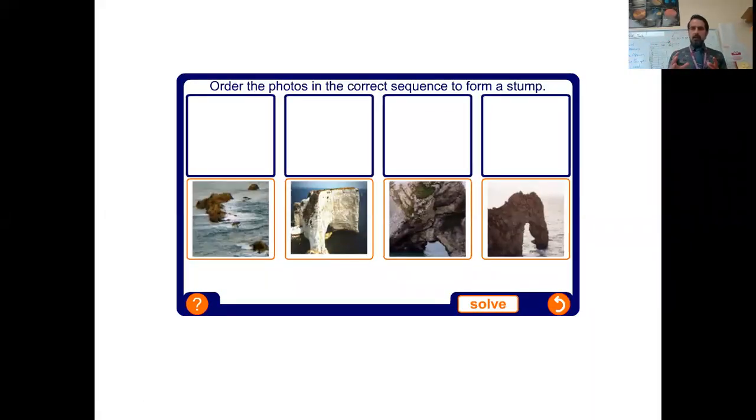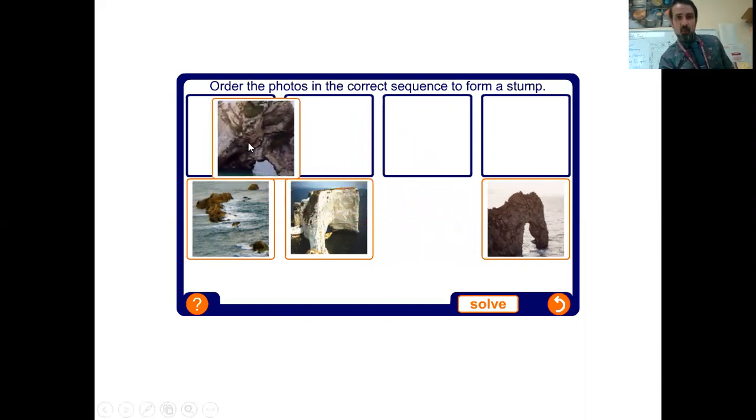Last lesson we looked at coastal features and erosion, including those four types of erosion and how they created certain things. If we look here and were going to put these in an order, we'd be looking at this one first because this is our smaller